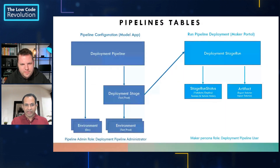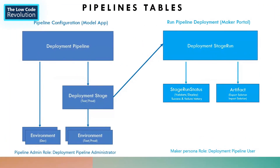A quick recap of the table structure, because this becomes important when we configure things. On the left side you see the pipeline administrator; on the right side, the pipeline user. The security rules are divided: the left side is defining and configuring, while the right side — those personas — are consuming the pipeline to deploy.